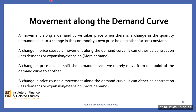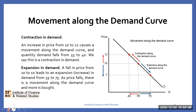A change in price, holding other factors constant, causes a movement along the demand curve, which can either be a contraction or an expansion. A contraction in demand is brought about by an increase in price. For instance, if the price was to increase from 10 to 12, then we'd have a movement from one point upward to the other point, and the quantity demanded will contract from 45 to 40.